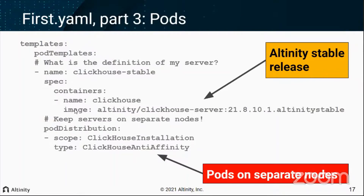Third part: defining what pods look like. In this case we run an Altinity stable release - fully open source, based on version 21.8.10.1 with three years of maintenance. Important: you don't want all pods clustering on the same machine. Without guidance, Kubernetes will place pods wherever there's available memory and CPU. The solution is 'pod distribution' with anti-affinity: every pod must go on a separate Kubernetes node. If you lose a node, you only lose one replica - always recommended for real production systems.